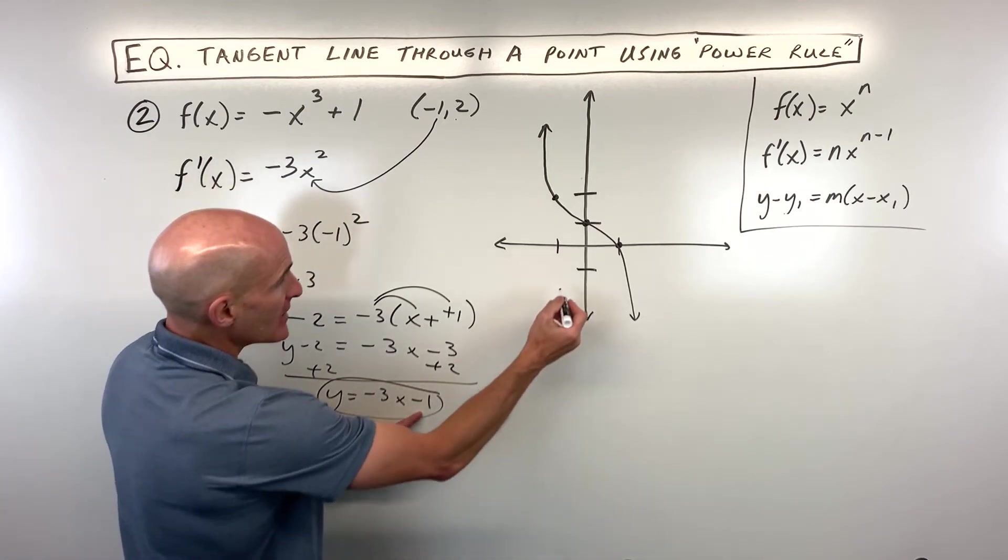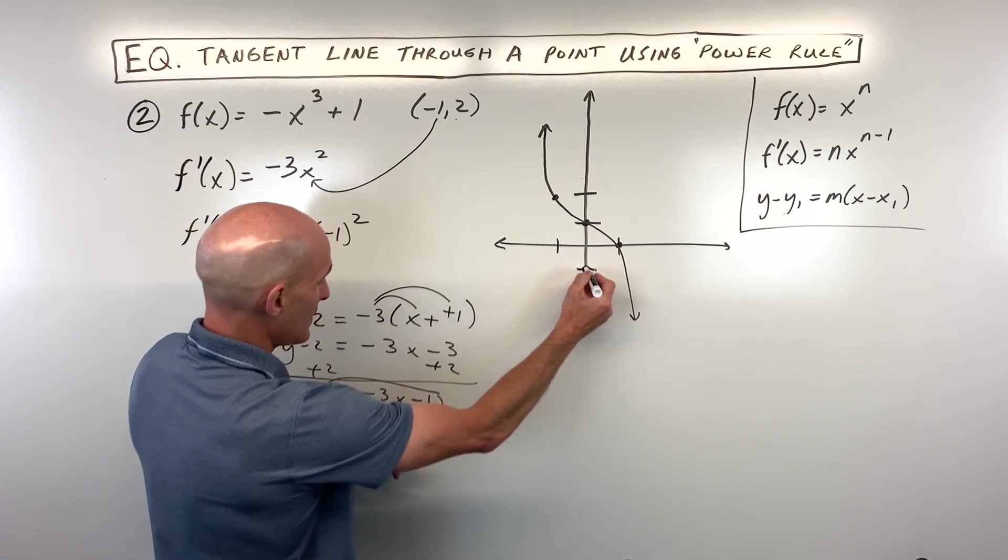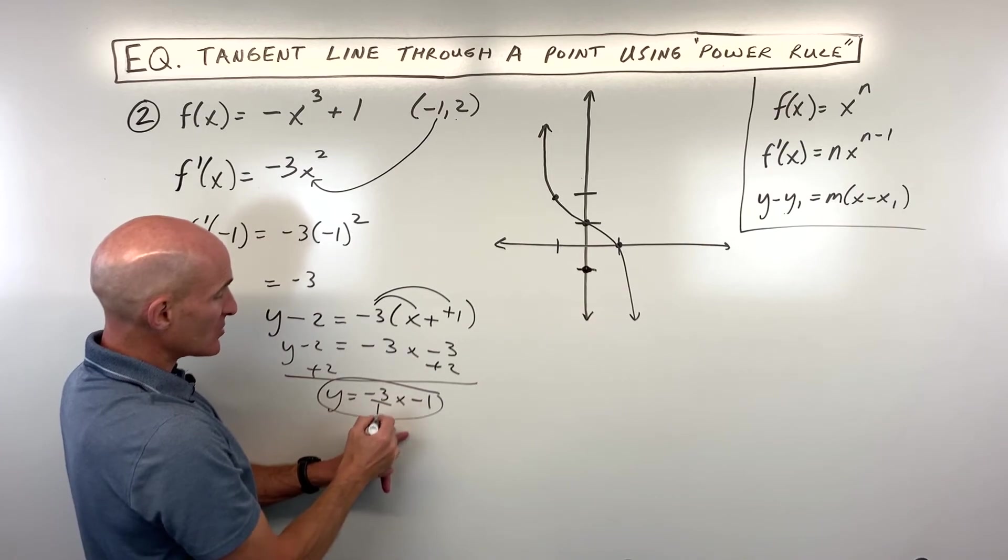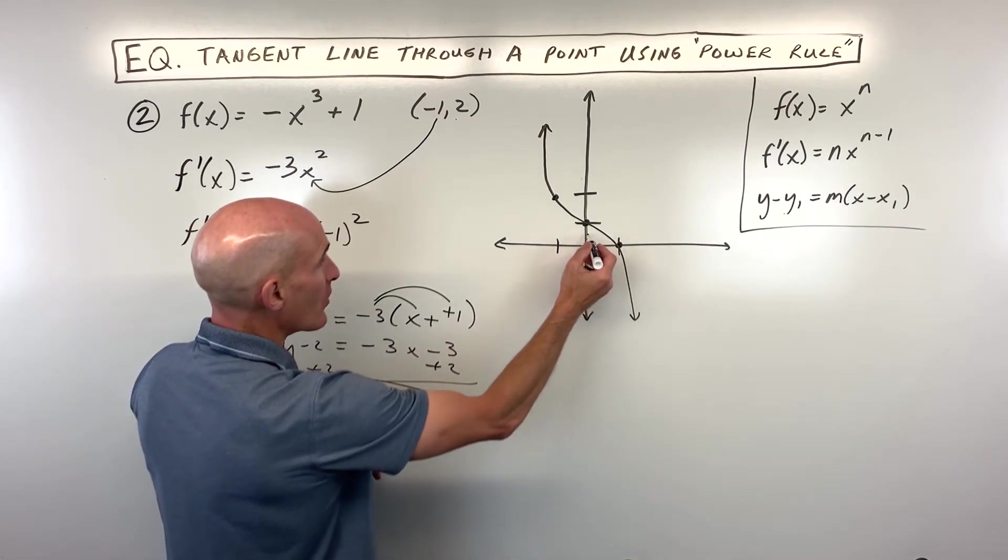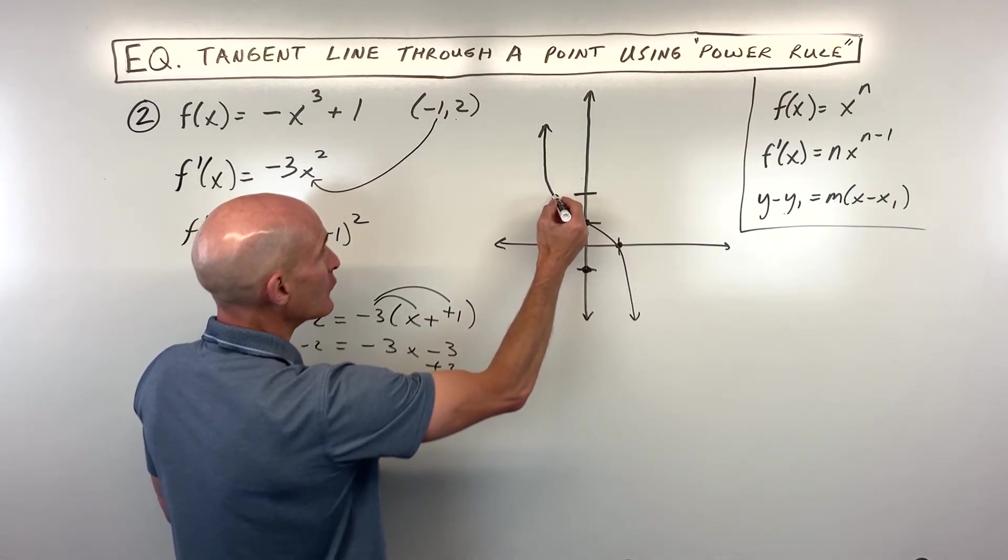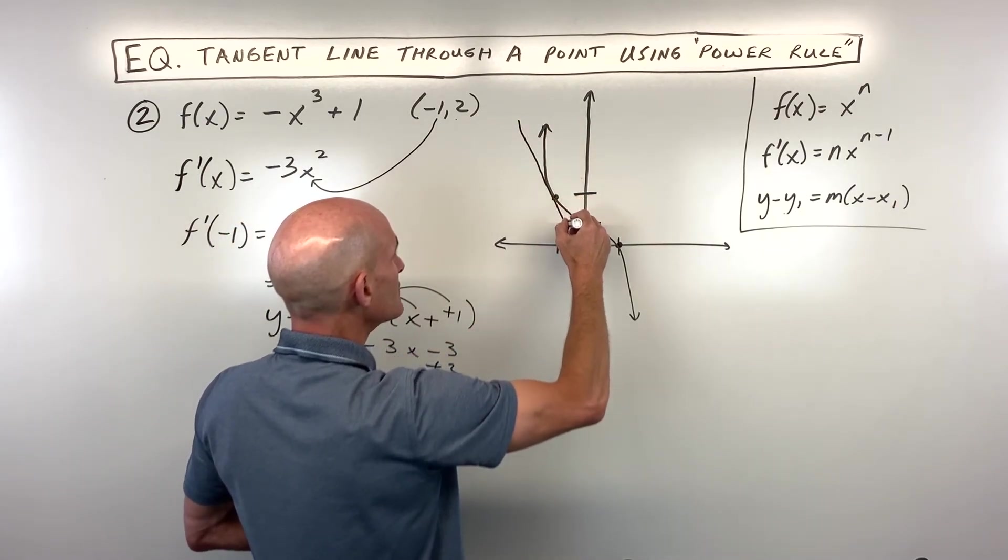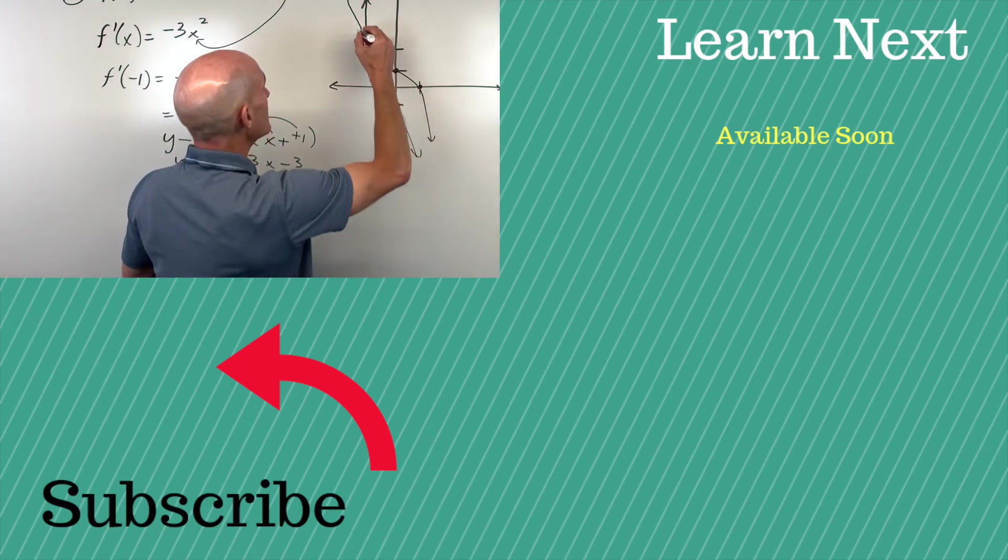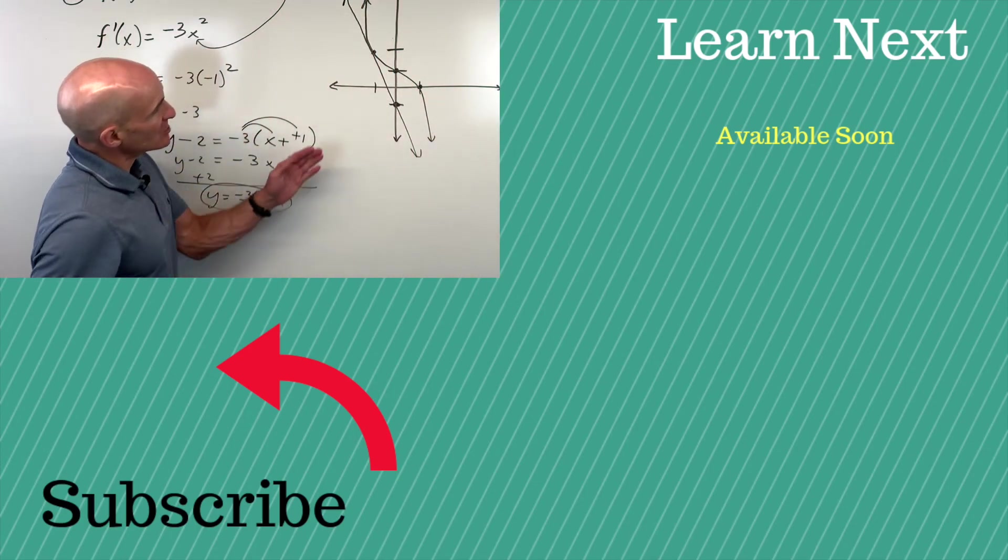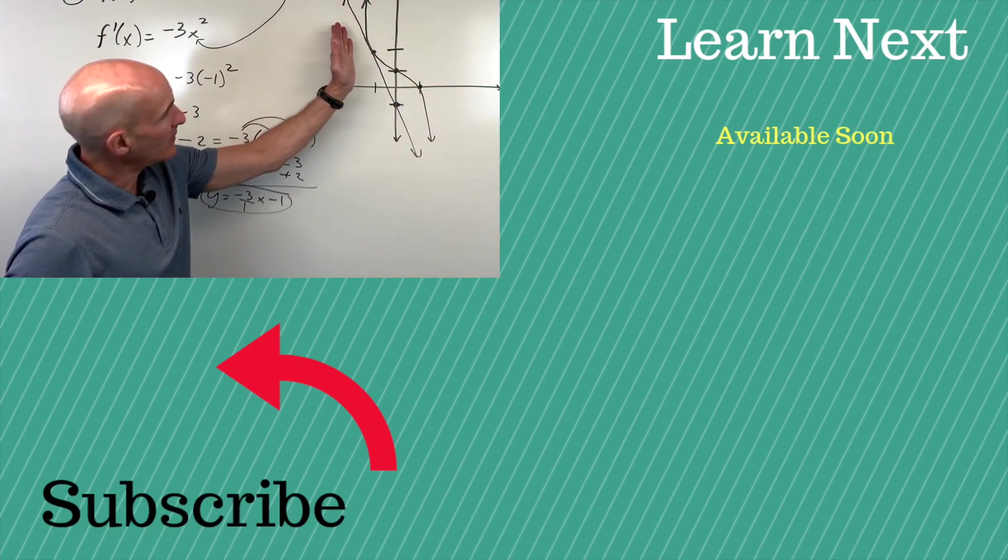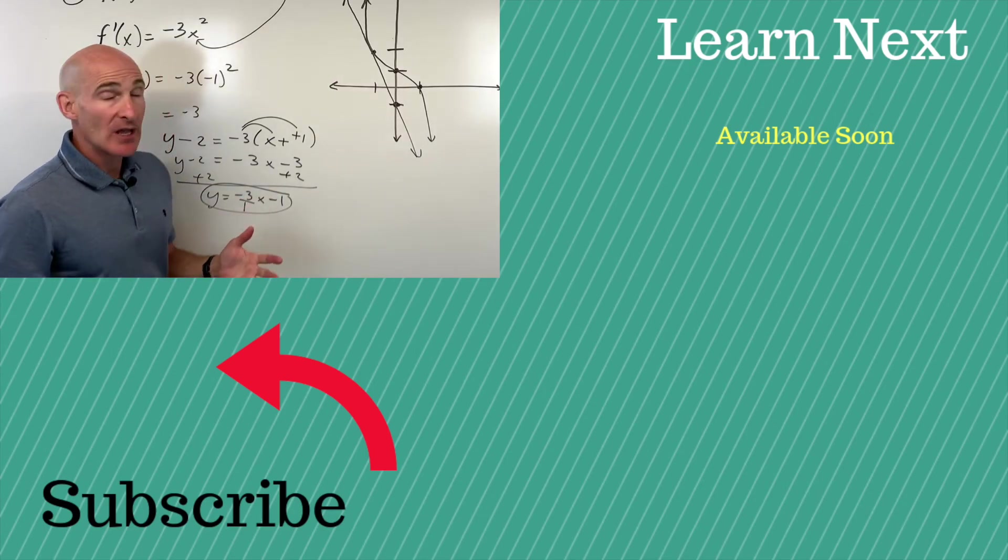Let's graph this. It has a y-intercept of negative 1. It has a slope of negative 3, which is like negative 3 over 1, so rise 3, run negative 1. You can see this is going to look something like this, approximately. If we graph our tangent line, it's just going to barely touch the graph at that point there. It has a slope of negative 3, and you got it. Great job.